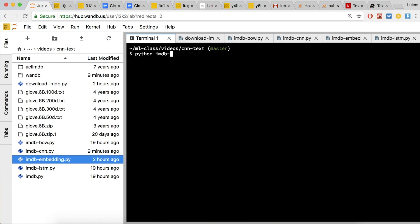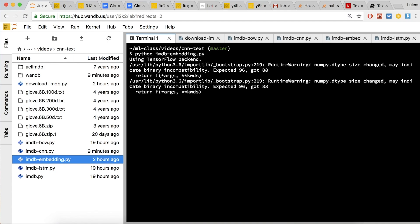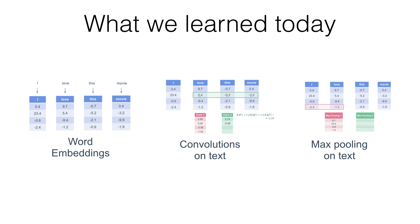So we learned about two really important things: first, how to use word embeddings, which is practical all over the place and not just in this application; and second, how to take convolutions, pooling, and all the things we did on images and apply them to text in a practical way to get high accuracy on the IMDB sentiment dataset. In the next video, we're going to learn how to take LSTMs and apply this to the same dataset.